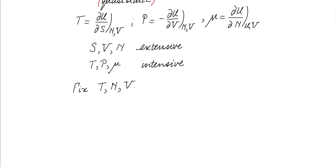Now consider the situation where we do not control S, V, and N, but instead fix T, N, and V. Could we then find an energy U as a function of T, N, and V such that the partial derivative of U with respect to T gives us S? It turns out that that is not possible.